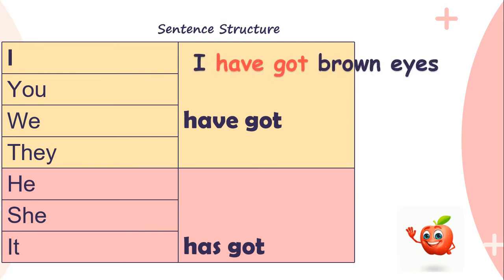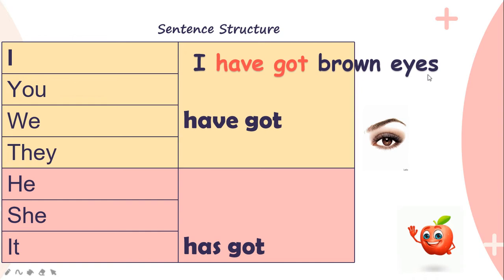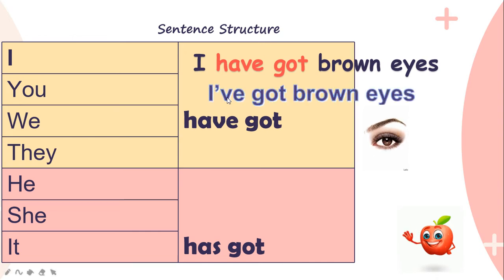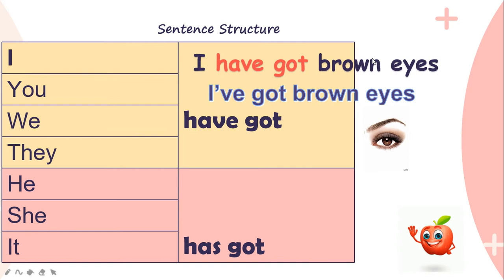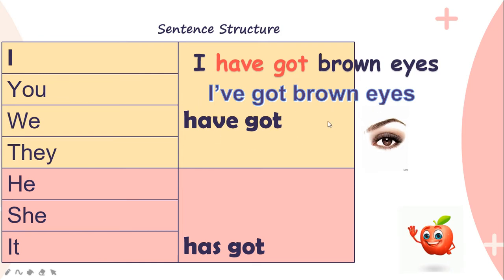For example: 'I have got brown eyes.' You can also write the short form: 'I've got brown eyes' — both forms are accepted. Similarly, 'we have got brown eyes' and 'they have got brown eyes' — or 'they've got brown eyes'. For I, you, we, and they, use 'have got'.